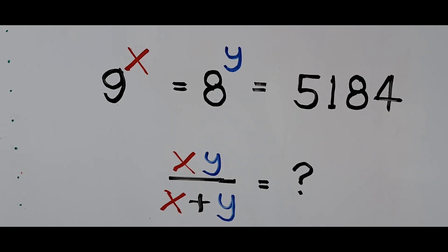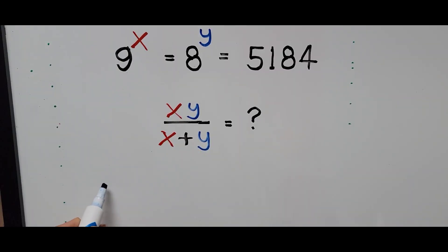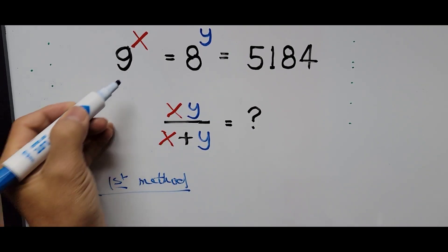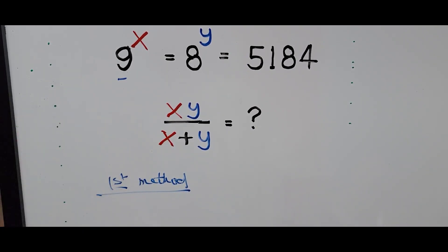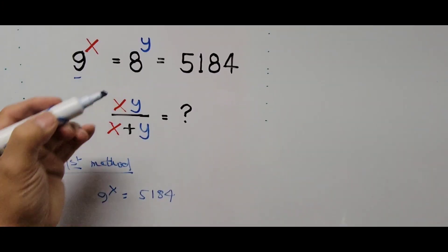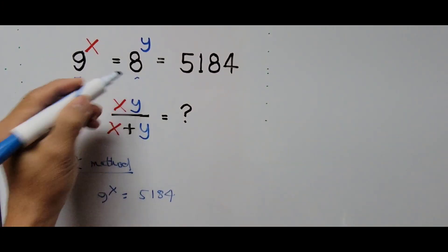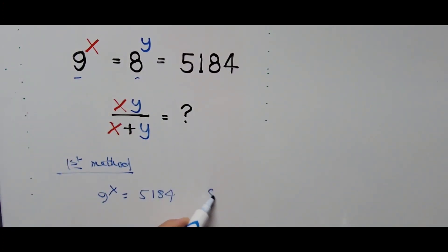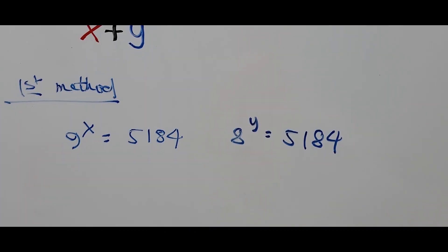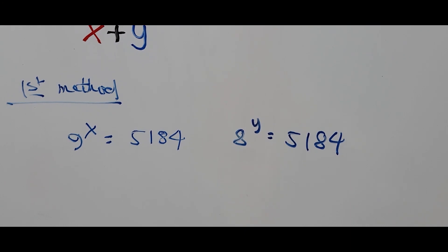Let's begin with the first method. We take the first equation: 9 to the power of x is equal to 5184, and the second equation: 8 to the power of y equals 5184. Here we'll be using the laws of common logarithm.